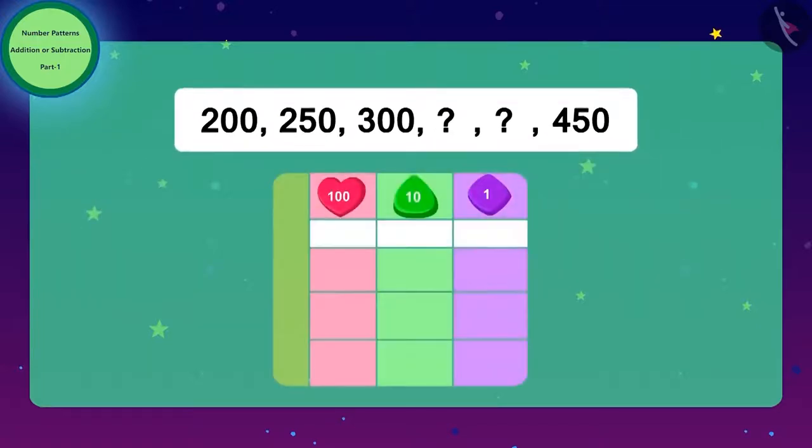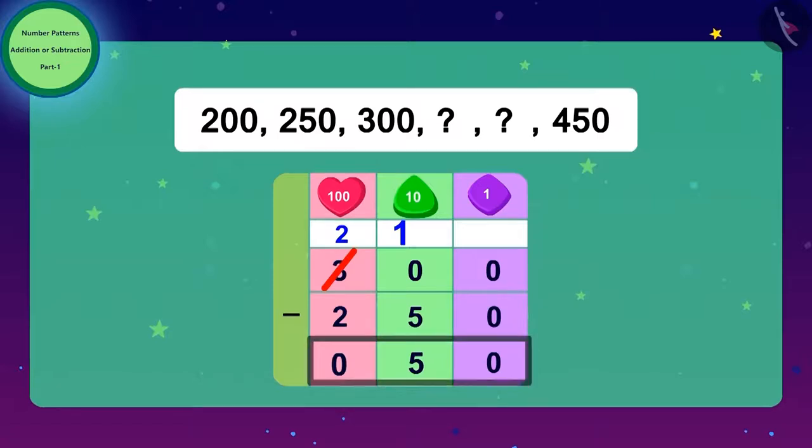To find the difference between the first two numbers, they should subtract 200 from 250. What remains when 200 is subtracted from 250? Then they found the difference between 300 and 250. And again they got 50.